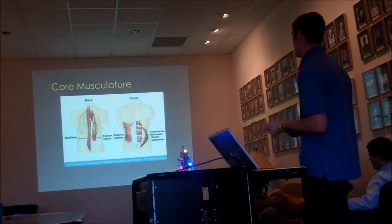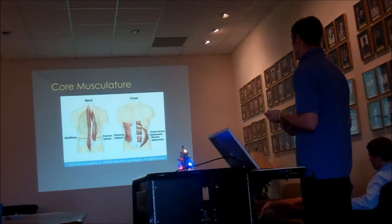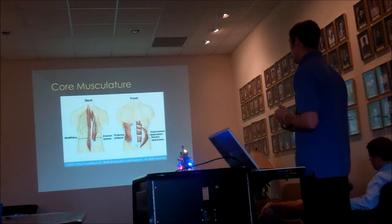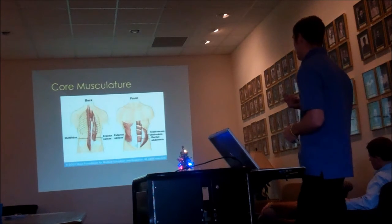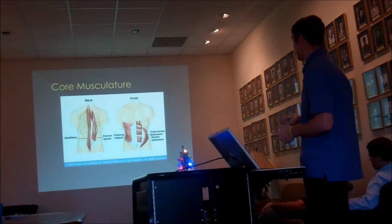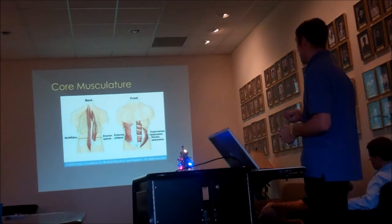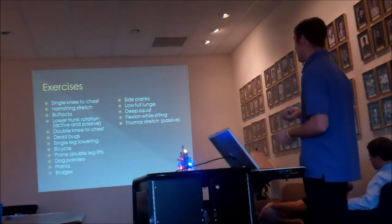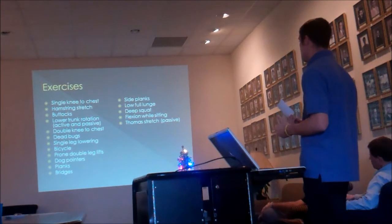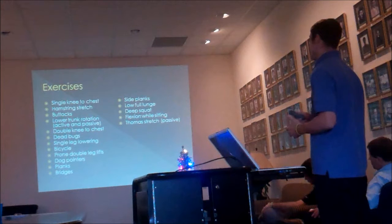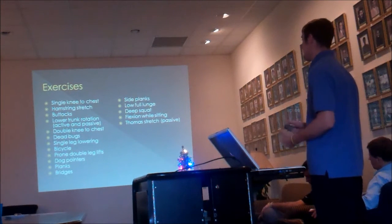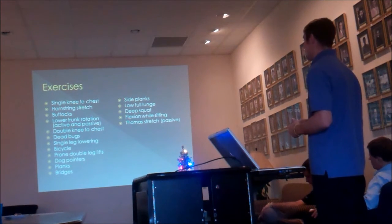For core musculature, these are the main muscles we worked on during rehab: the paraspinals, the multifidus, the erector spinae, the obliques, and the abs. These are the exercises we went through — a combination of stretching and strengthening, with most stretches being both active and passive.